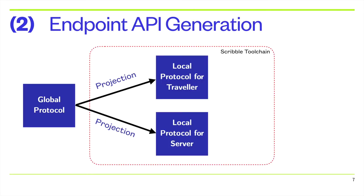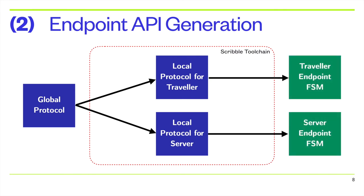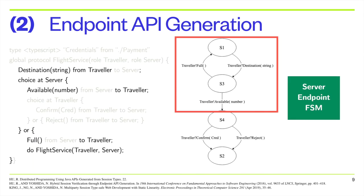Scribble projects the global protocol onto each endpoint to obtain a local protocol for that endpoint, which describes the interactions of the global protocol from that endpoint perspective. Each local protocol can be represented by an endpoint finite state machine or EFSM. For example, the EFSM for the server describes the permitted send and receive actions for the server to carry out the flight booking service protocol.